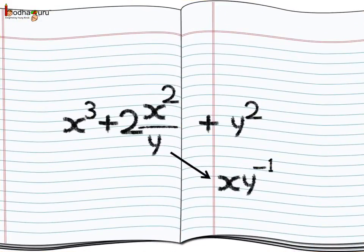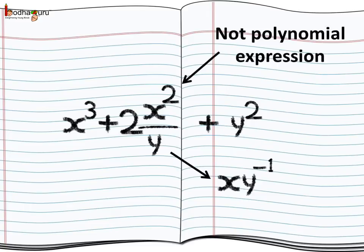Now, can the degree of a polynomial be negative? Let's find out. First of all, algebraic expressions with multiple terms are not always polynomial expressions. Here we have x³ + 2x²/y + y². We know 1/y means y raised to the power minus 1. So this algebraic expression has a term with a negative exponent. Such an expression is not a polynomial expression. Thus, polynomial expressions don't have any terms with negative exponents. As polynomials don't have negative exponents, the degree of a polynomial is never a negative value.